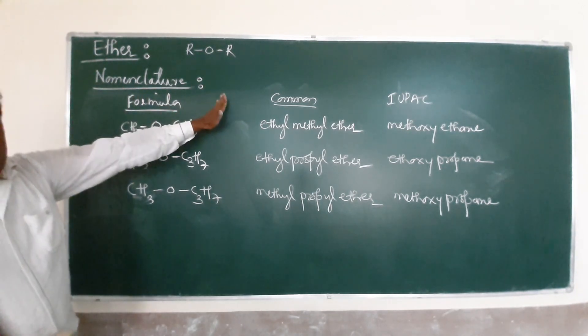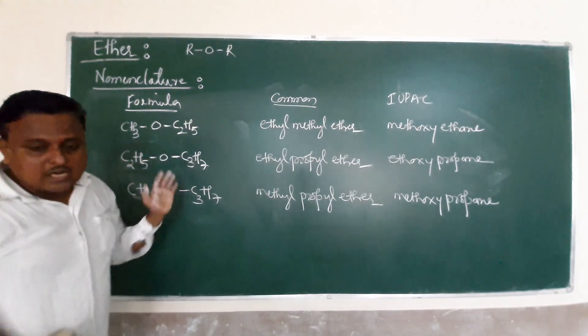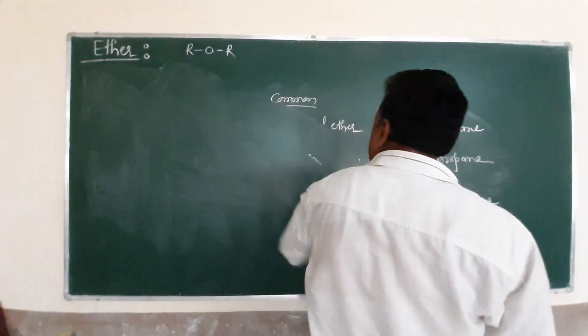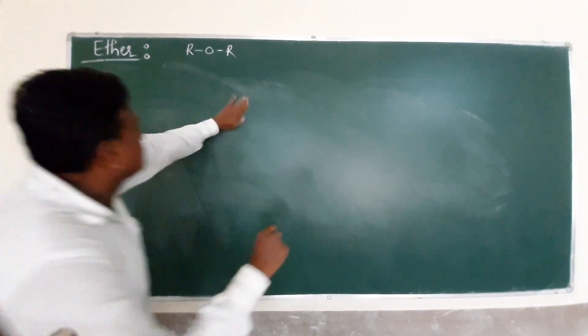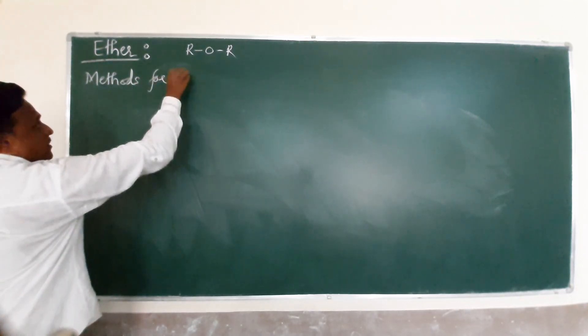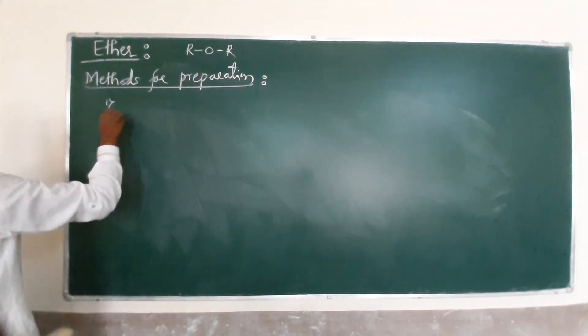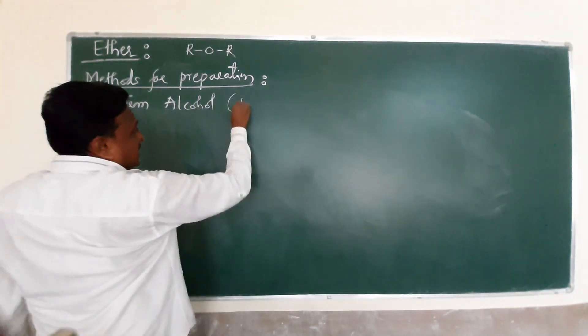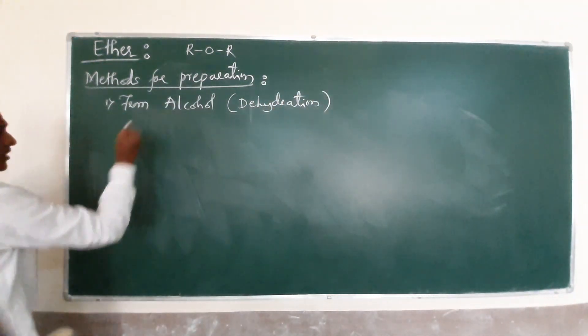After this nomenclature, let us move on to the very important part - methods for preparation. How to prepare ethers in our laboratories. First method: from alcohol. We call it a dehydration reaction. This is a very important question.